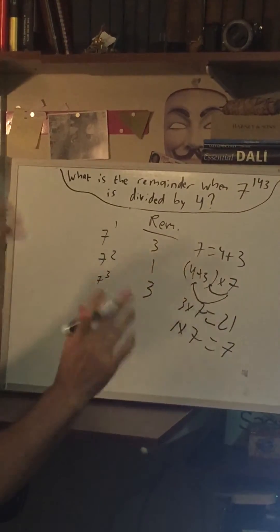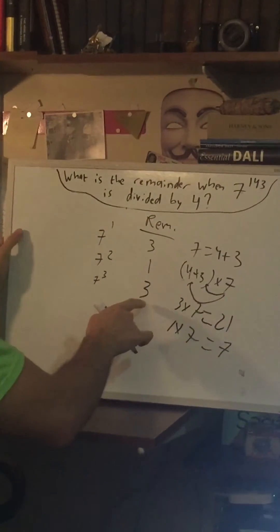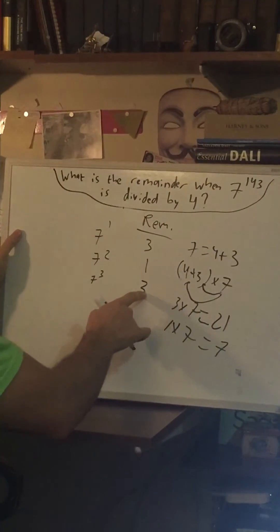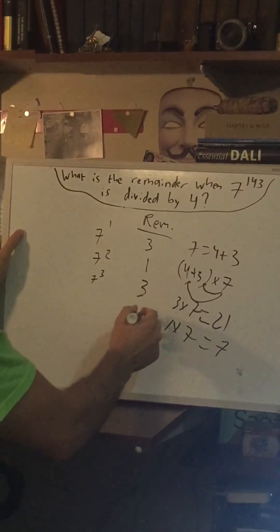Alright, so let's just, for giggles, let's do this one more time. Multiply this by 7, again 21, divided by 4, remainder of 1.